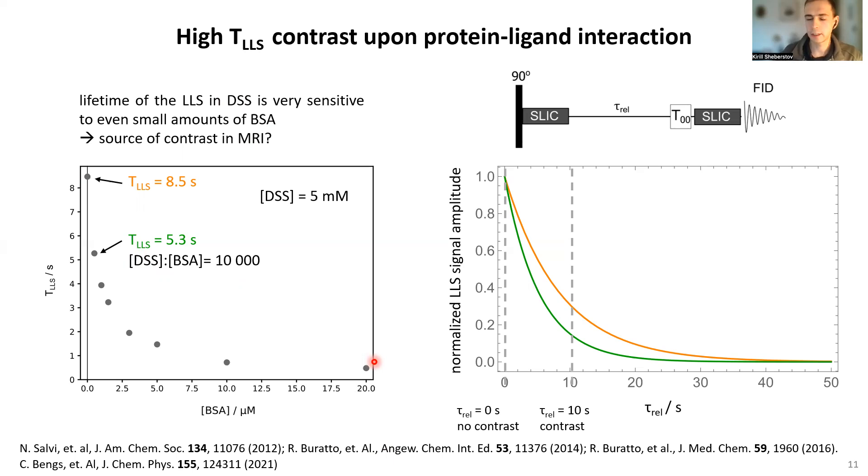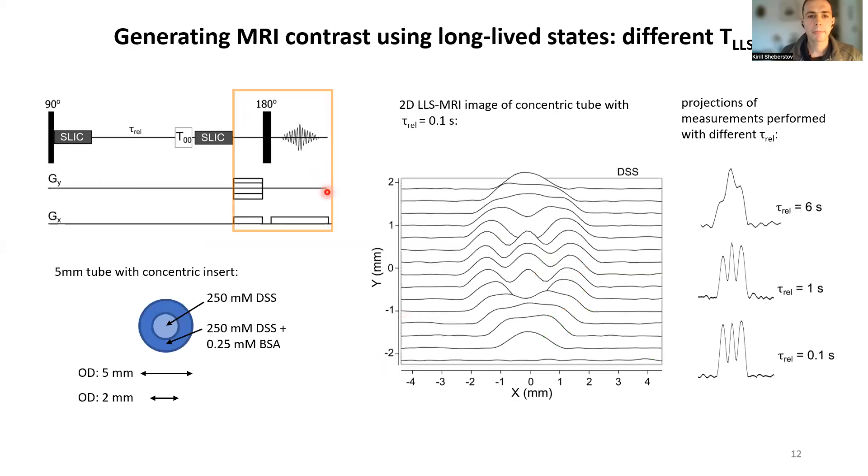It also provides a way to observe MRI contrast. In this experiment we performed SLIC encoding and imaging. On the second stage we used a sample which essentially was two compartments: two coaxial tubes. The inner tube contained DSS.